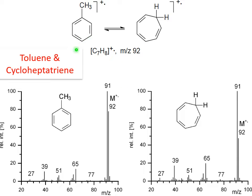When you start with toluene or cyclic heptatriene, you actually get exactly identical mass spectra. The starting compounds are different — they are stable compounds that can be isolated — but when you form the cation, this is essentially the same cation. So m/z 91, loss of one hydrogen, gives you a very stable ion, and then you have the sequence 65→39. Alternatively, the sequence 77→51 is barely visible. You cannot see a difference between the two spectra.